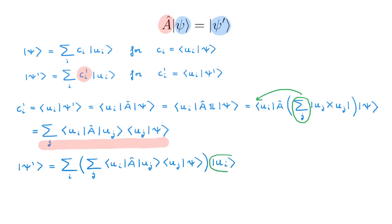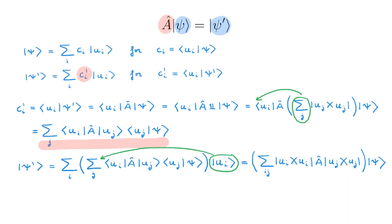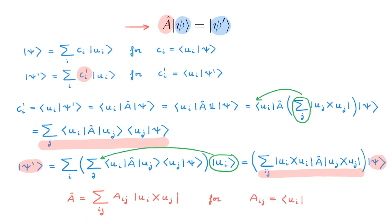The final step is to move the |u_i⟩ basis ket to the beginning — we can do this because the other two terms are simply scalars. We can rewrite the whole expression, taking |ψ⟩ outside the parenthesis because it doesn't explicitly depend on either i or j. The term in parenthesis is acting on the ket |ψ⟩ and giving the ket |ψ'⟩ — this is exactly what the operator A does, so the term in parenthesis is the operator A. We can write an operator A in a basis u as the sum over i, j of A_ij multiplying the outer product |u_i⟩⟨u_j|, where A_ij = ⟨u_i|A|u_j⟩ is the matrix element of A. The numbers A_ij represent the operator A in the u basis, just like the numbers c represent the ket |ψ⟩ in the u basis.